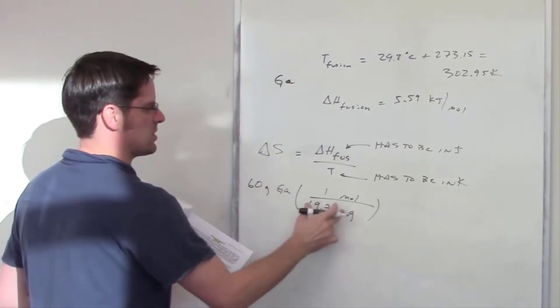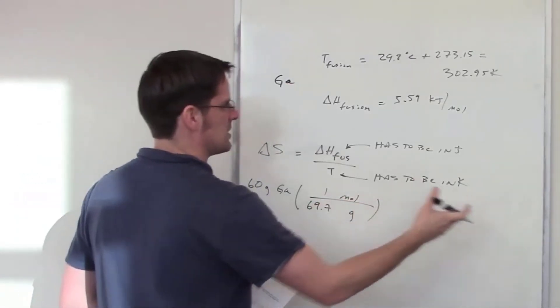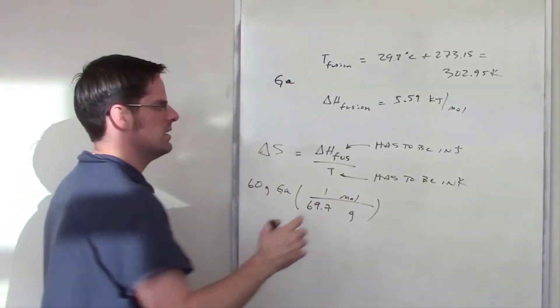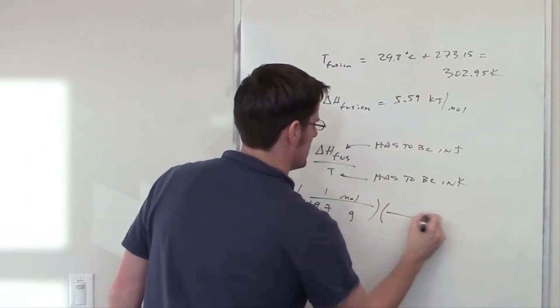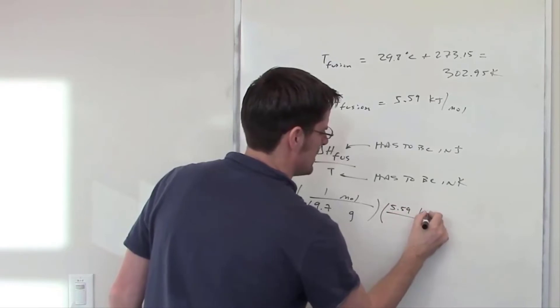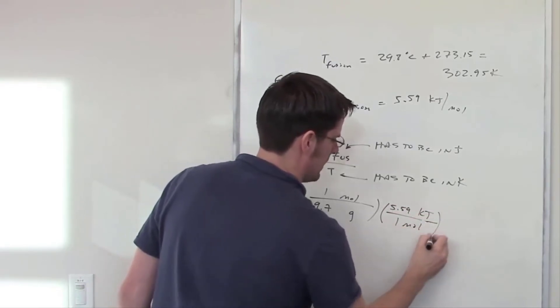You'll notice that the grams cancel each other. I'm left with moles but I want to eventually get to joules. How can I do that? Well I've got this number here that has kilojoules per mole so I bet I could use that. I'll go 5.59 kilojoules in one mole for gallium.